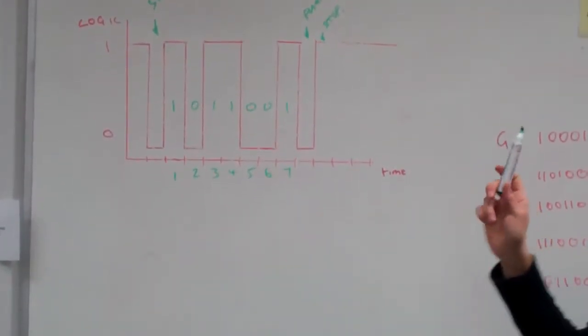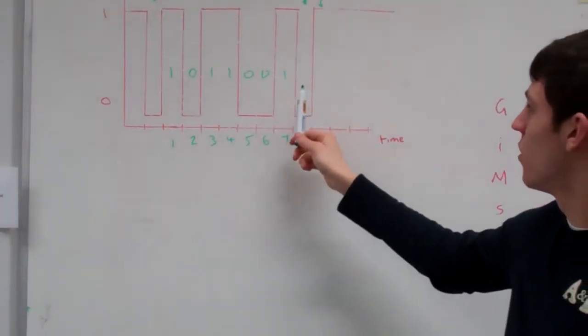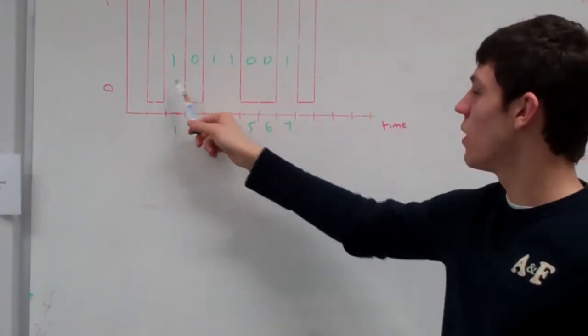When this data is sent, it's sent in reverse. So we're looking for the combination which goes from 1, 0, 0, 1, 1, 0, 1.